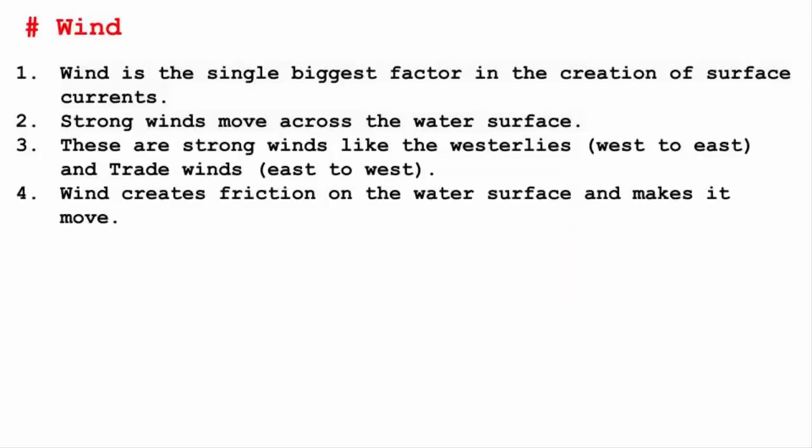In a nutshell, when wind blows on the surface of the ocean, it pushes the water to move. And there is friction between the wind and the water surface, and that affects the movement of the water body.